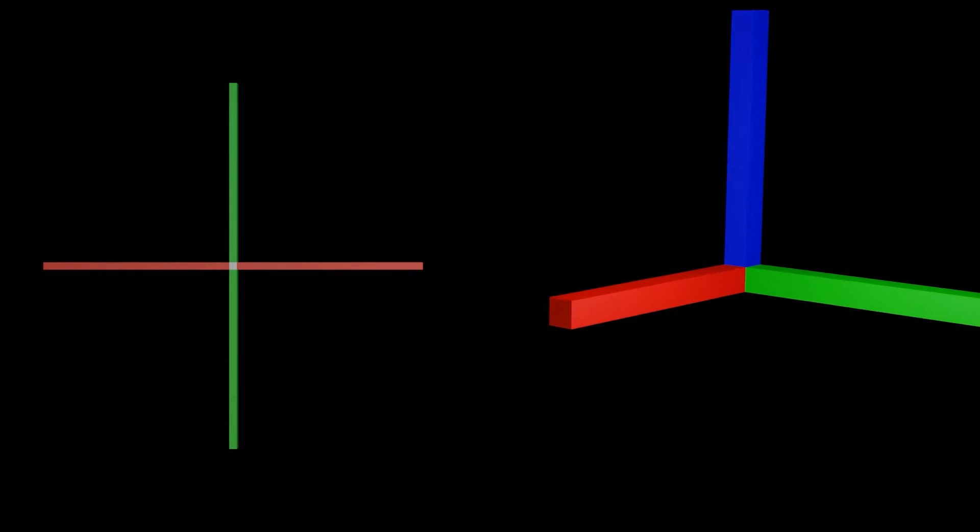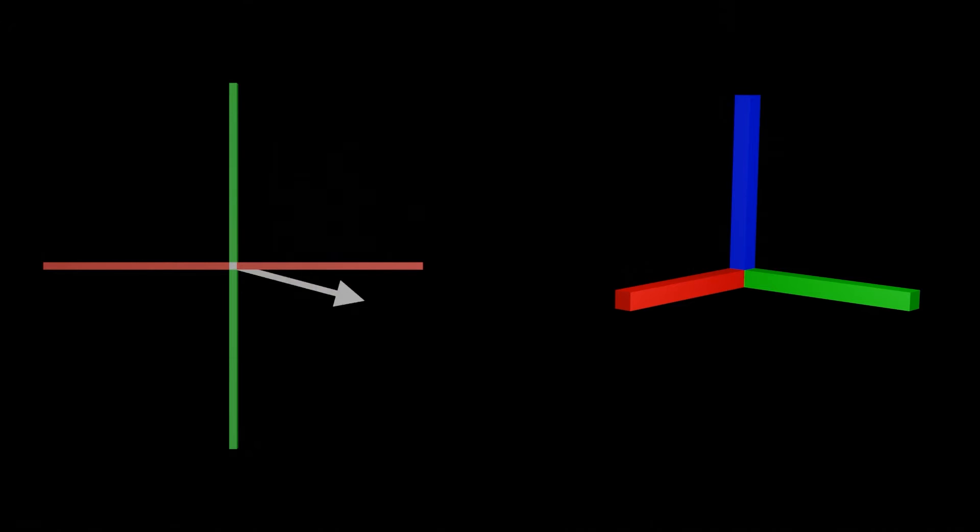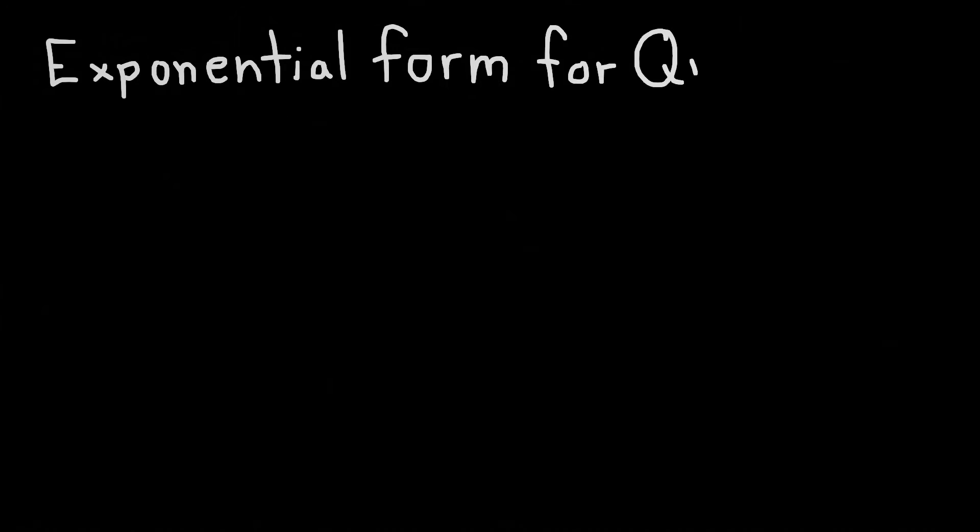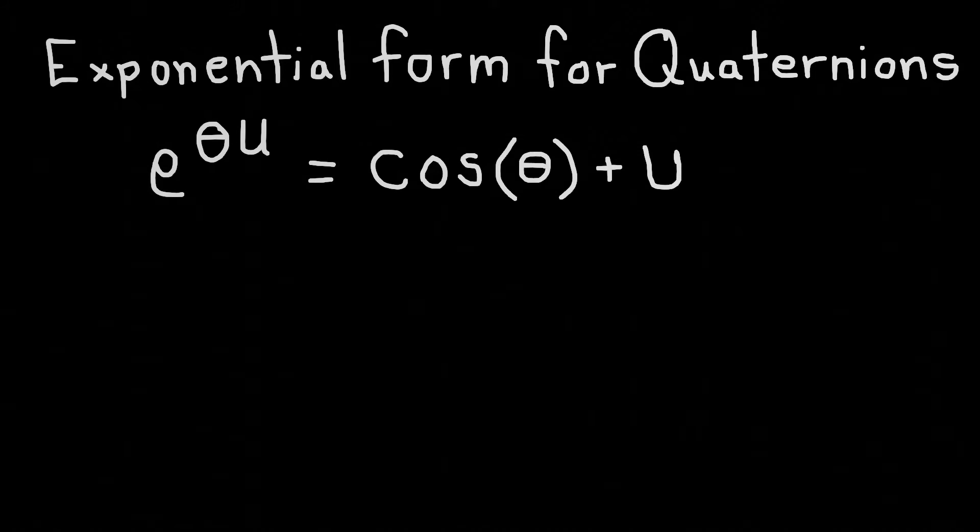In the same way that we can multiply two complex numbers in order to model a rotation in two-dimensional space, we can multiply quaternions in order to do the same thing in three-dimensional space. And for that we're going to use what is known as a pure quaternion, where the real component is zero and the i, j, and k components correspond to the x, y, and z axis of our three-dimensional space. Again, it helps to use the exponential form of the quaternion as we did with the complex numbers to see how we can use this for rotations.